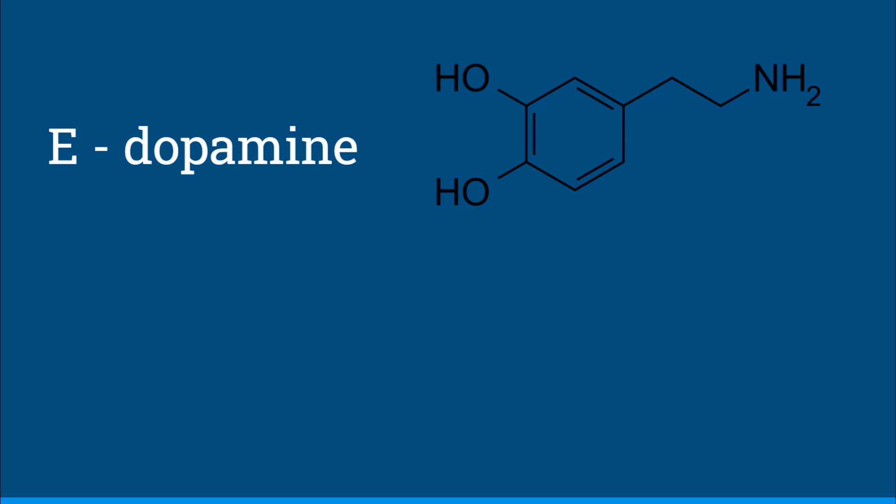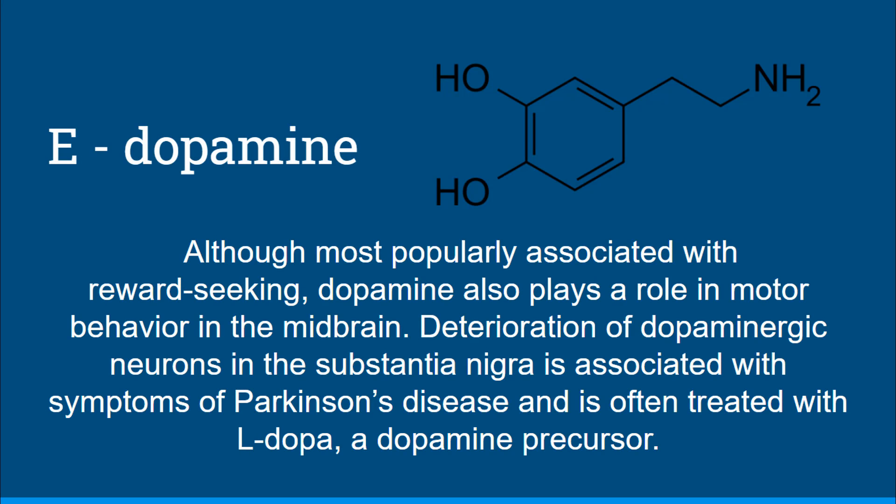The answer is E, dopamine. Although it's most popularly associated with reward-seeking behaviors, dopamine also plays a role in motor behavior. Deterioration of dopaminergic neurons in the substantia nigra in the midbrain is associated with symptoms of Parkinson's disease, and it's often treated with L-dopa, an amino acid that's a dopamine precursor.